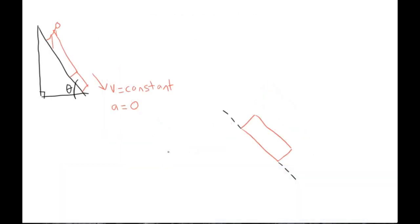The first force that we want to consider is one that is pretty much always present, and that is gravity. So the weight of the sled, which is equal to its mass times the acceleration of gravity, is pulling the sled directly downwards. The sled is not falling through the slope and into the ground because there is a normal force acting perpendicular to the surface of the slope.